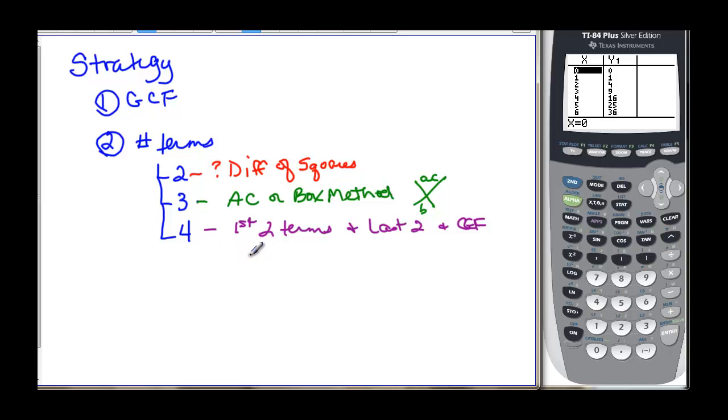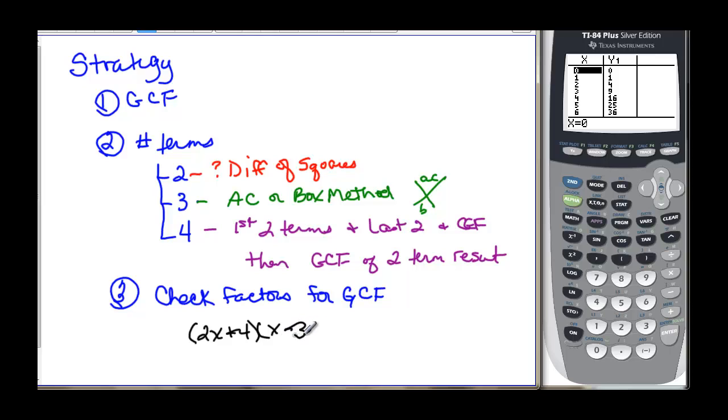Then you take the greatest common factor of the 2 term result. And then the last step in our strategy would be just to check the factors one more time for a greatest common factor. Sometimes we don't catch it in the very beginning, but it will be in the end. Here's an example of what I'm talking about. If I had 2x plus 4 and x minus 3, well, 2x plus 4 has a common factor in it of 2. So then I need to factor that out and I'd have x plus 2 and then x minus 3. This would be the completely factored form.